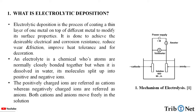An electrolyte is a chemical whose atoms are normally closely bonded together, but when it is dissolved in water its molecules split up into positive and negative ions. The positively charged ions are referred to as cations, whereas negatively charged ions are referred to as anions. Both cations and anions move freely in the solution.